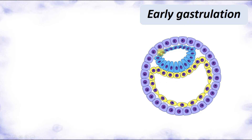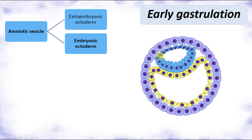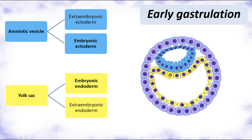The amniotic vesicle includes ectoderm: the embryonic ectoderm, which is attached to the yolk sac, and extra-embryonic ectoderm at the top. The bottom of the amniotic vesicle is embryonic ectoderm. The yolk sac also has embryonic and extra-embryonic parts but forms endoderm. The embryonic endoderm is attached to the embryonic ectoderm, and the extra-embryonic endoderm forms the bottom of the yolk sac.